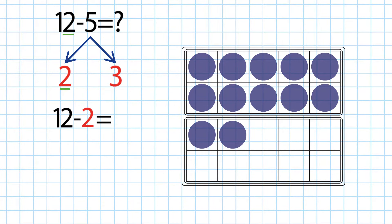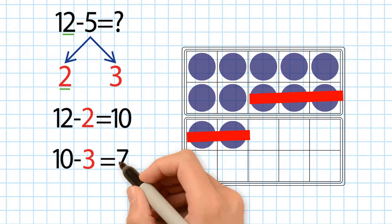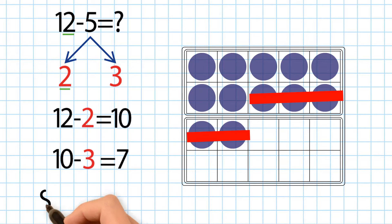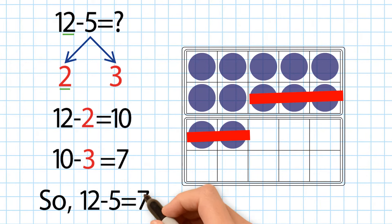First, we do 12 minus 2 to make a 10. Next, we subtract 3 from 10 to make 7. So, 12 minus 5 is equal to 7.